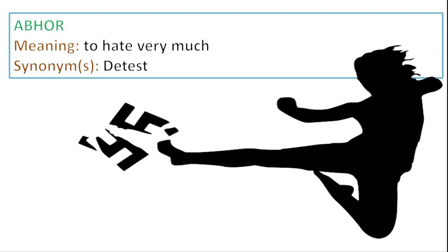Next is abhor. Abhor means to detest or to hate a lot. If you just want to say that you really, really don't like something, then you say I abhor it or I loathe it. Another synonym for this can be loathe. As you can see, this girl is striking down the symbol of the Nazis — what we are trying to say is that she abhors Hitler or his policies or whatever he did with the world.